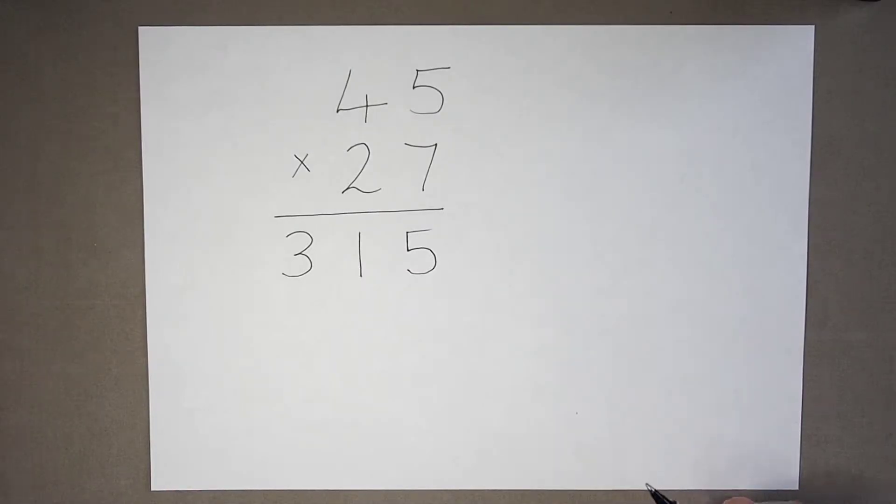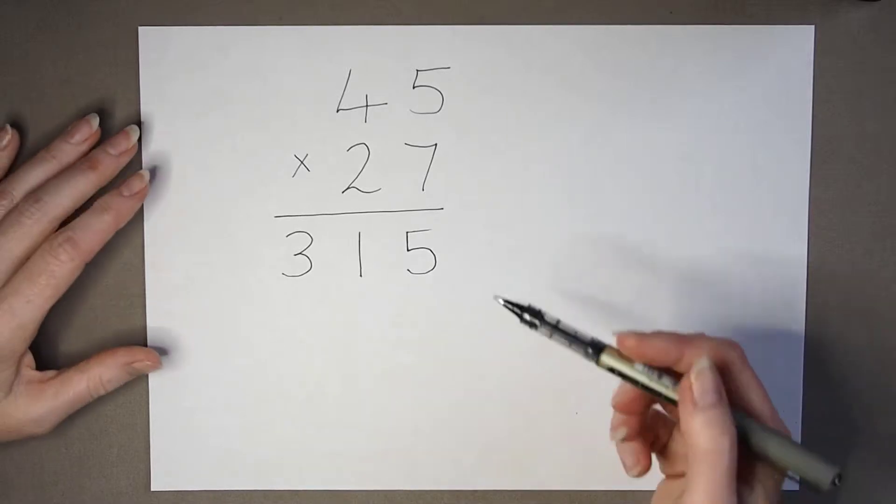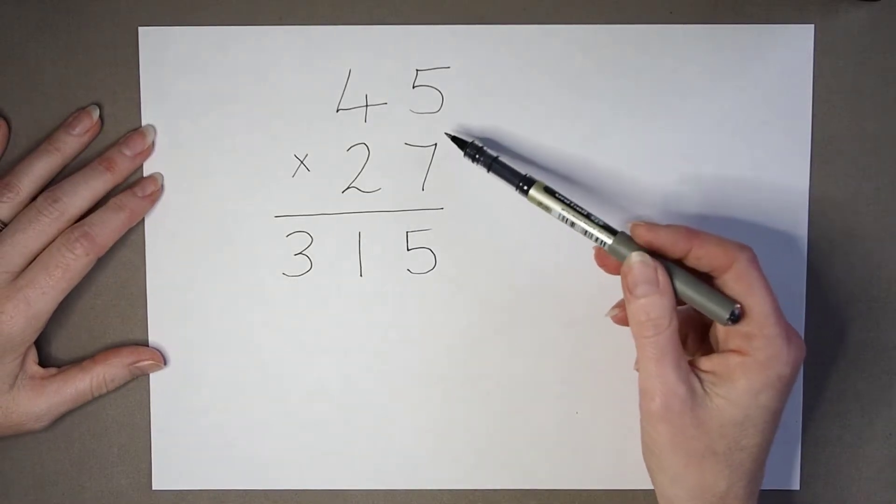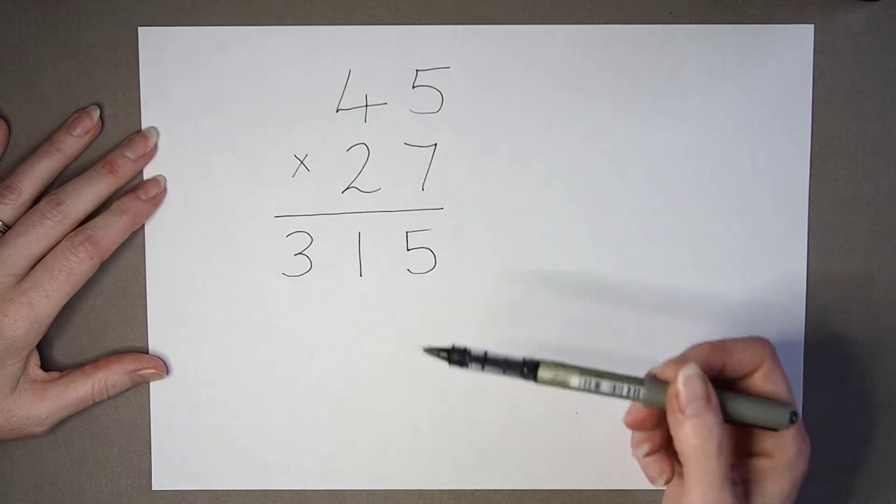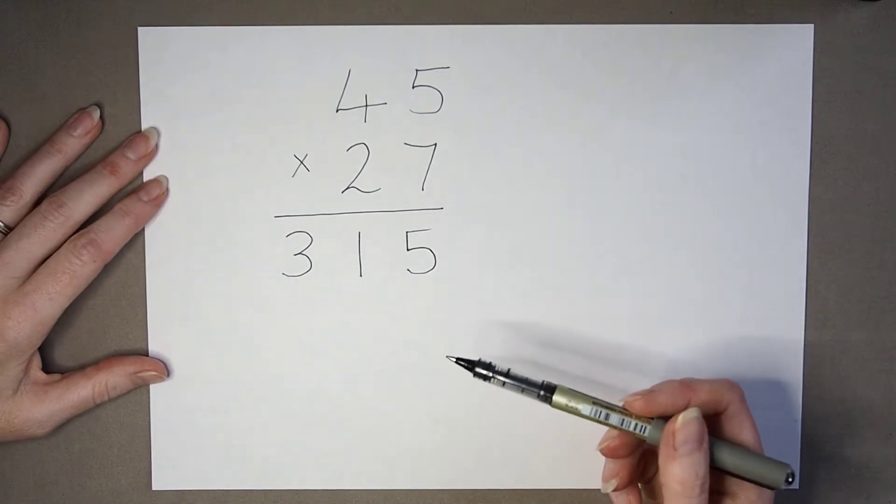One mistake that pupils can make when doing long multiplication is to forget to put the placeholder in.